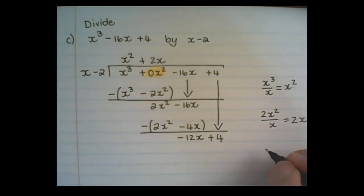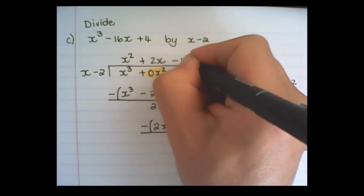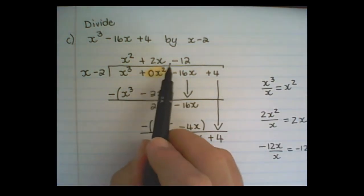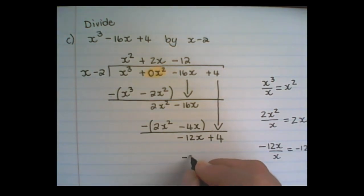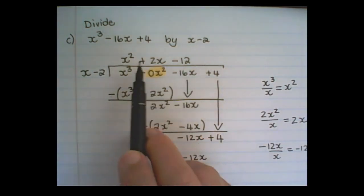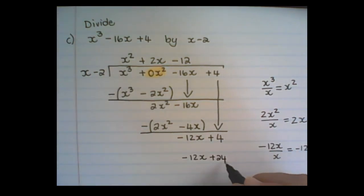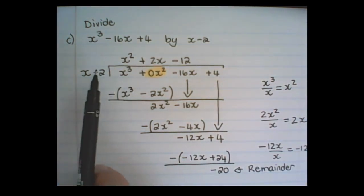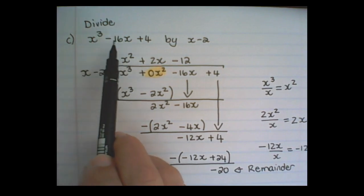Now this is the last division I need to do. So it is negative 12x divided by x is equal to negative 12. And I write it here at the top. Then I multiply out. So negative 12 times x is negative 12x. And negative 12 times negative 2 is plus 24. But remember this part we need to subtract. So the 12x will cancel each other out. And I have plus 4 minus 24, which is negative 20. And because this is not 0, this is called the remainder. That means that x minus 2 doesn't go perfectly into x cubed minus 16x plus 4.